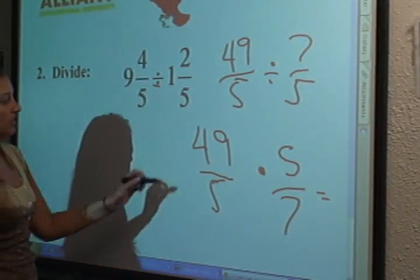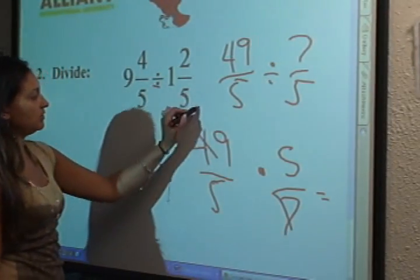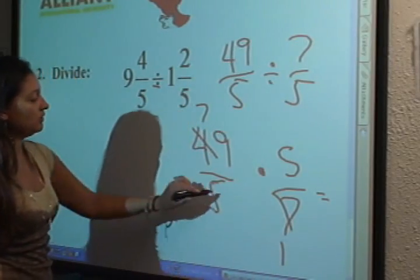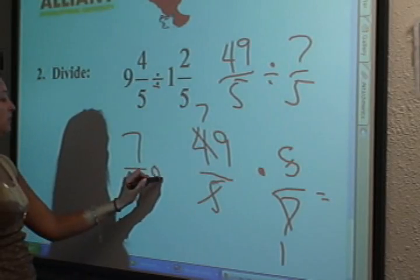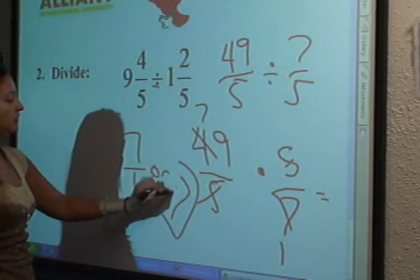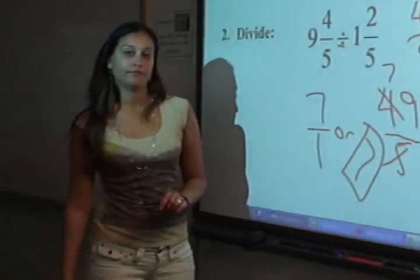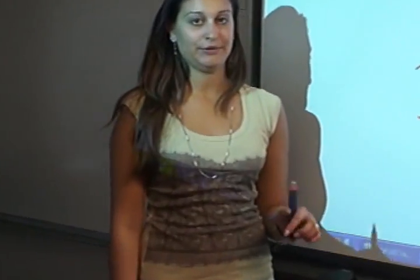And then we can cross-cancel making this a 7, this a 1. These both make 1. So we end up with 7 over 1 or just 7.